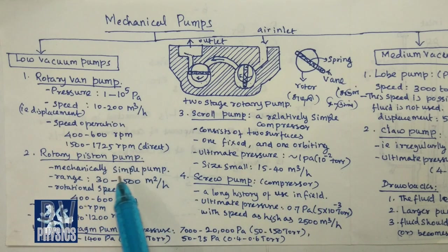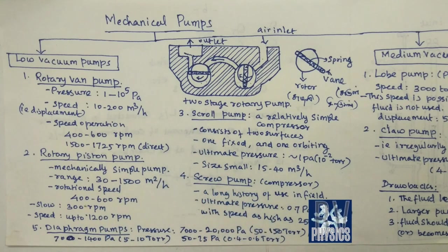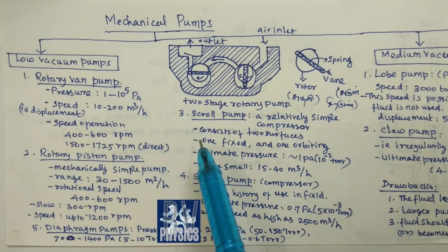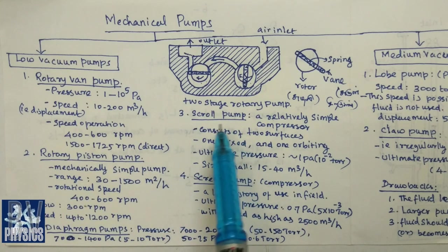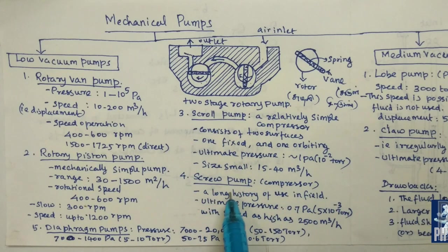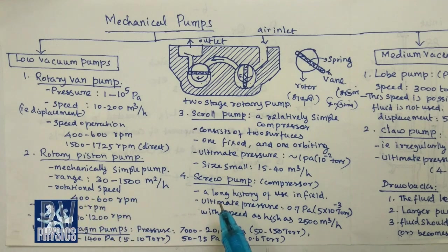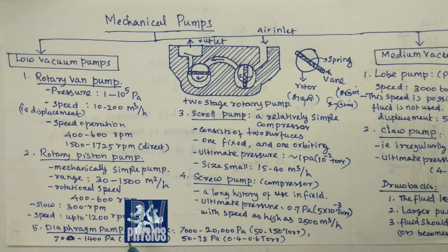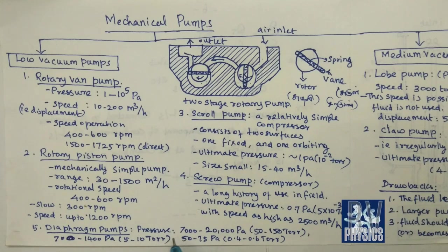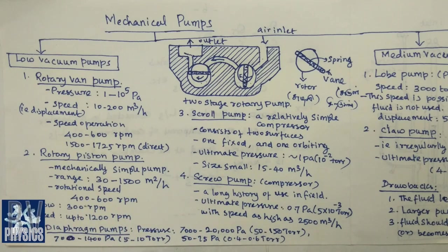Rotary piston pump has a pressure range and rotation speed similar to the rotary vane pump. The pump is multi-stage. Scroll pump has a disc or spring or sutra mechanism. Screw pump is a more recent design. The diaphragm pump has a diaphragm sheet and creates a vacuum.